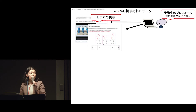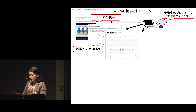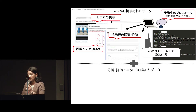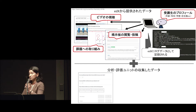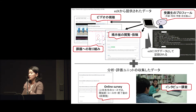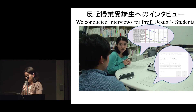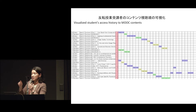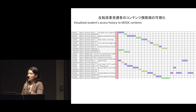We received this log data from edX, and the center also ran surveys with questionnaires as well as interviews to understand how students received the flipped class. In addition to the survey questions, we visualized which scenes a student viewed. We then asked: why did you watch this scene so many times? Why did you skip that part? And received their answers. As a result of this survey, we had some findings.